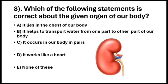Question number 8. Which of the following statements is correct about the given organ of our body? Option A. It lies in the chest of our body. Option B. It helps to transport water from one part to another part of our body. Option C. It occurs in our body in a pair. Option D. It works like a heart. Option E. None of these. So the answer is option C.